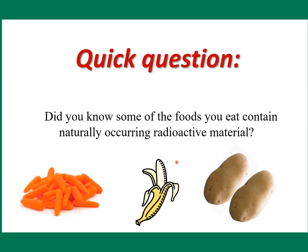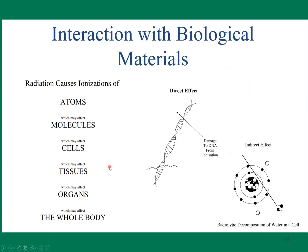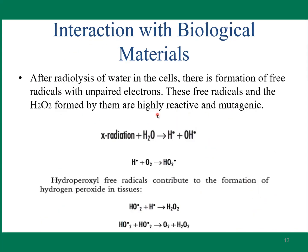Regarding photon interaction with matter: the energy of X-rays that enter objects could be absorbed, scattered, or transmitted. Radiation causes ionization when it interacts with atoms, molecules, cells, or tissue. The direct effect is radiation directly damaging DNA. The indirect effect is due to water molecules in our body, causing creation of free radicals such as H2O2, which is highly reactive and mutagenic.